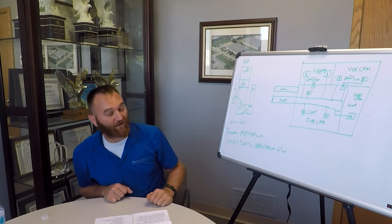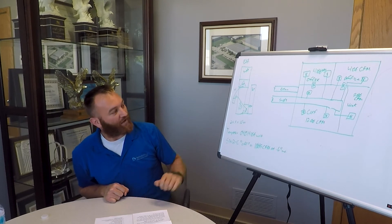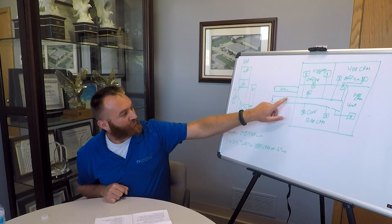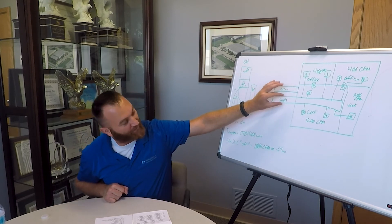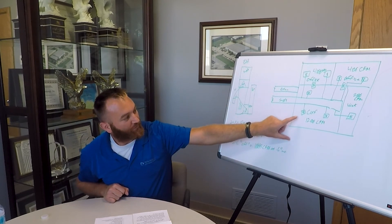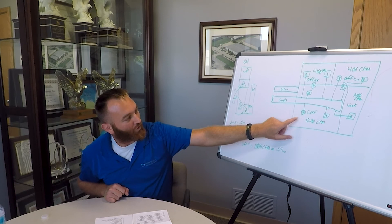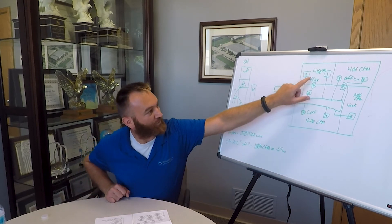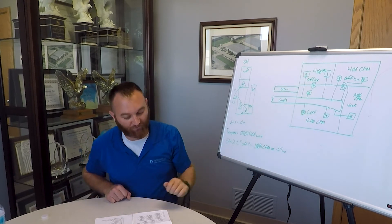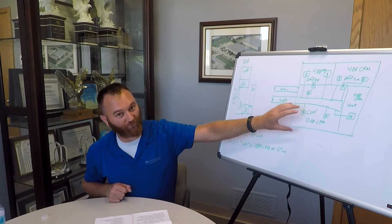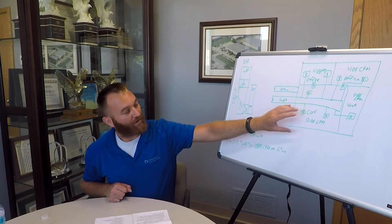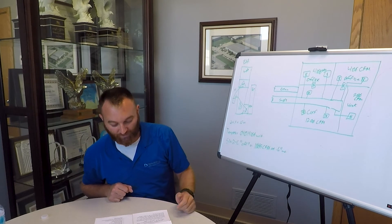You can use the static and velocity pressure readings with a pitot-static tube. You can traverse your ductwork to get your airflow in a run, or you can use a hood to measure the different supplies in each space. It's important that you have proper air balance so that each space is provided the proper CFM to heat or cool that space properly.